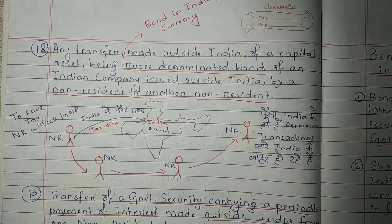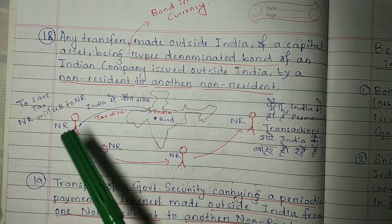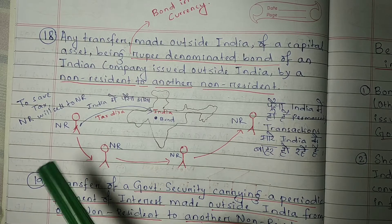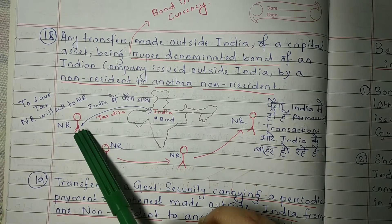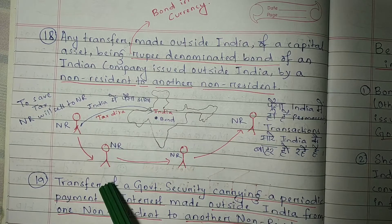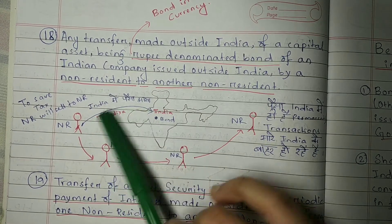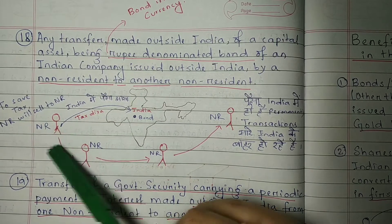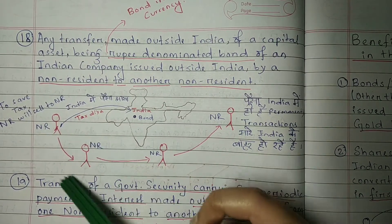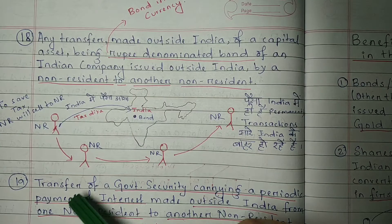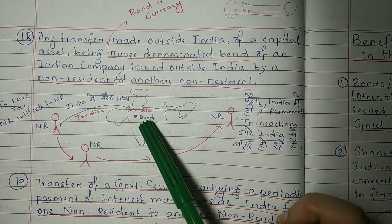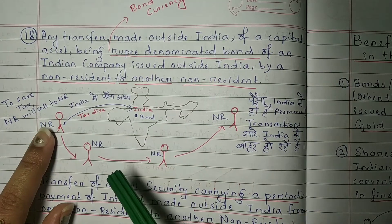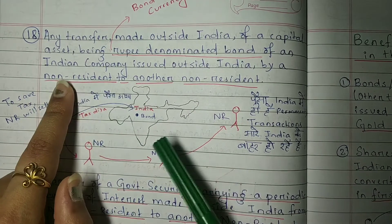The reason the government made this provision is: when an NRI purchased this bond in Indian currency, the money came into India. The NRI already paid tax on that transaction. So if this non-resident sells the bond to another non-resident, the money that came into India was permanently in India. Therefore, no capital gain tax needs to be paid on such a transfer.